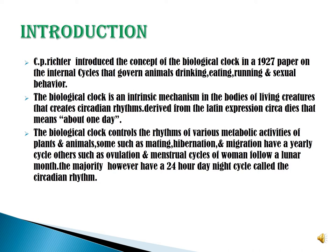Some rhythms, such as mating, hibernation and migration, have a yearly cycle. Others, such as ovulation and menstrual cycles of humans, follow a lunar month. The majority, however, have a 24-hour day and night cycle called the circadian rhythm.